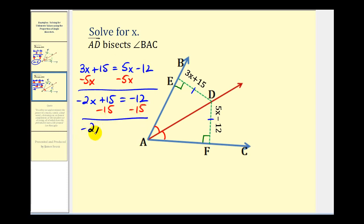So we'd have negative two x equals, this would be negative 27. Now we'll divide both sides by negative two. So we'd have x equals, this would be positive 27 halves. Well, 27 divided by two would be 13.5.